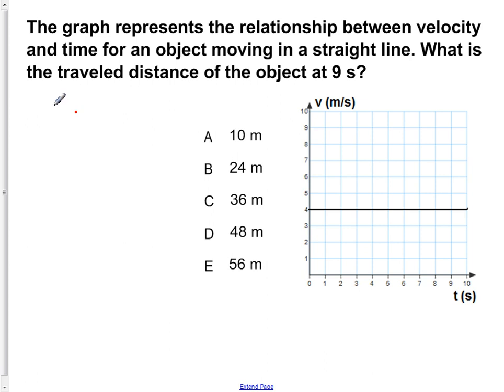The graph represents the relationship between velocity and time for an object moving in a straight line. What is the travel distance of the object at 9 seconds?